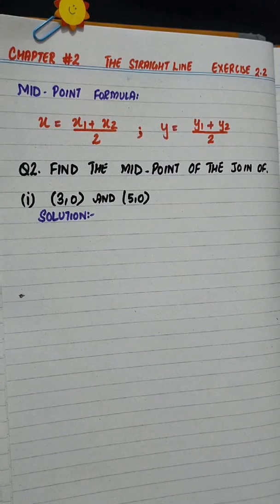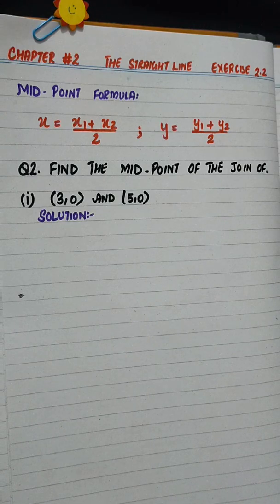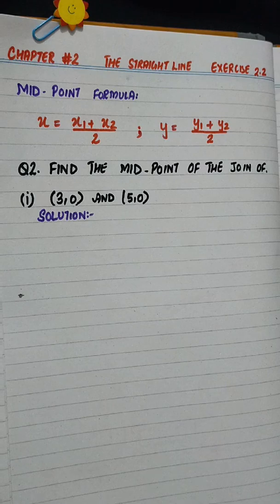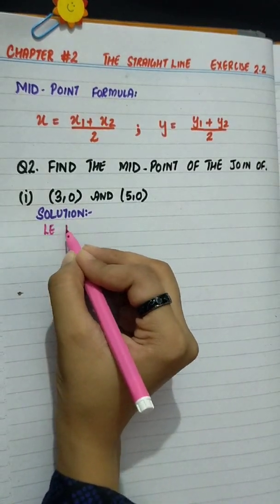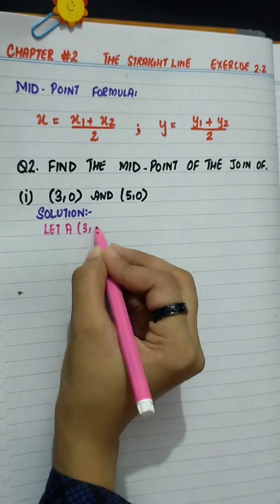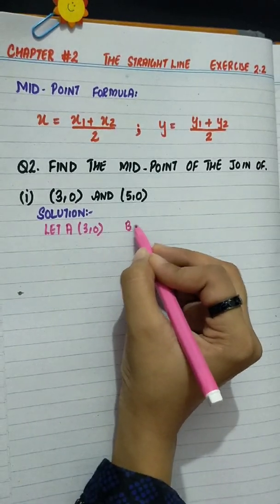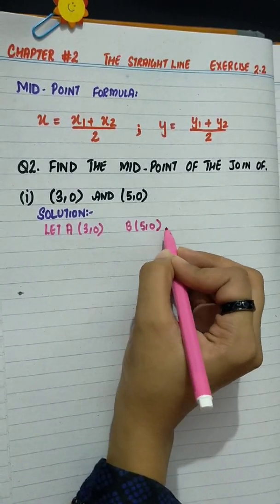Exercise 2.2 questions we will solve topic-wise. So today, we will do question number 2. Find the midpoint of the join of part number 1 is 3,0 and 5,0. Let A be 3,0 and B be 5,0.